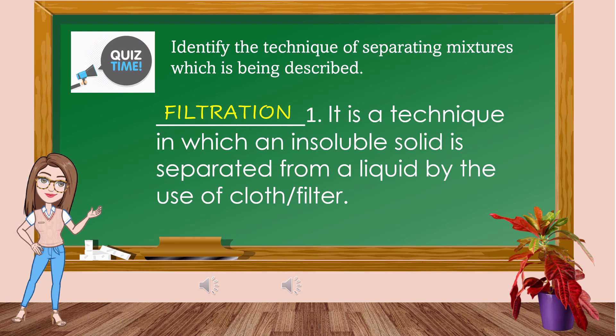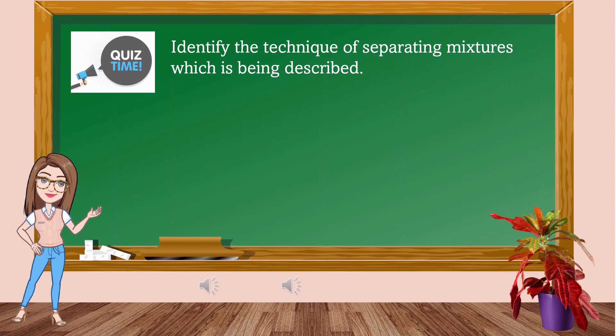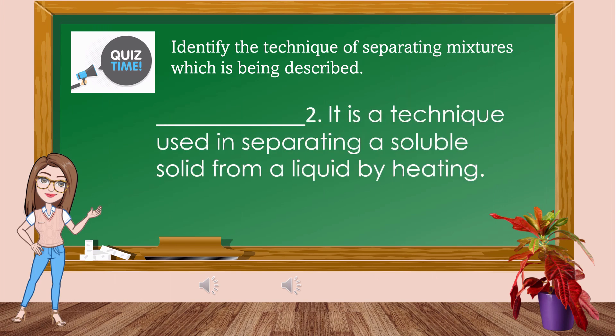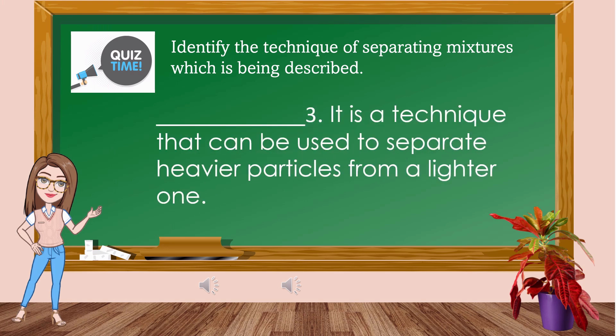Number 2: It is a technique used in separating a soluble solid from a liquid by heating. The answer is evaporation. Number 3: It is a technique that can be used to separate heavier particles from a lighter one. The answer is decantation.